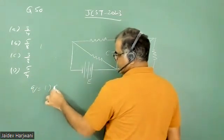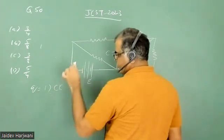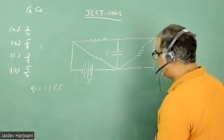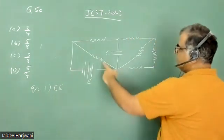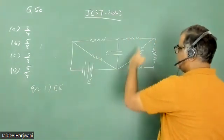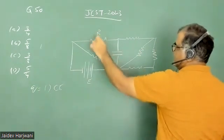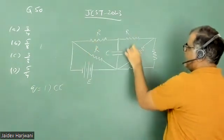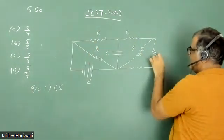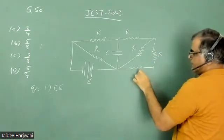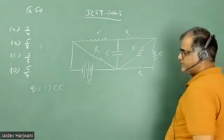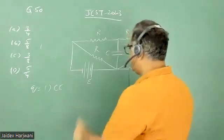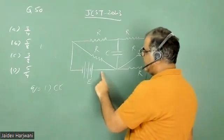They are given that these two resistances are identical, so let us put this resistance R, R, R, R, R. Now you can see from this figure.